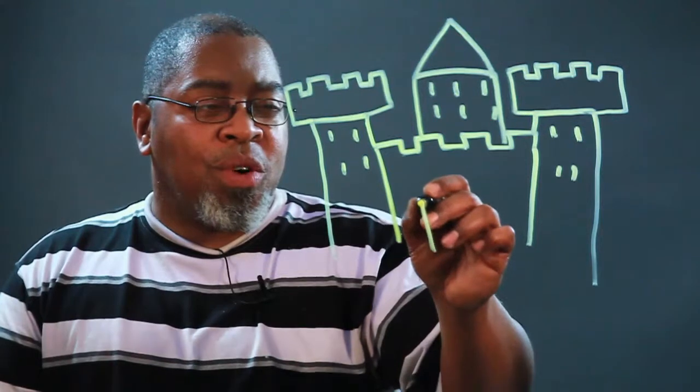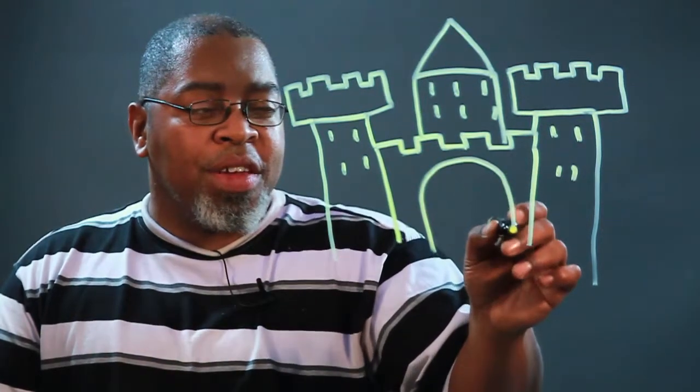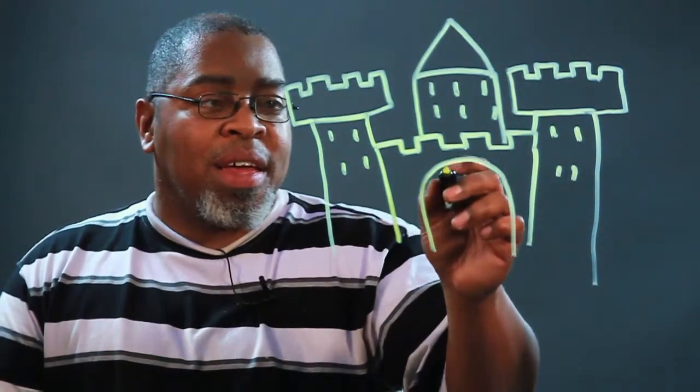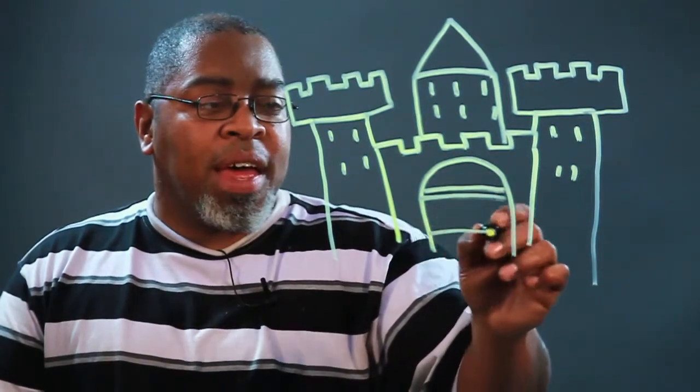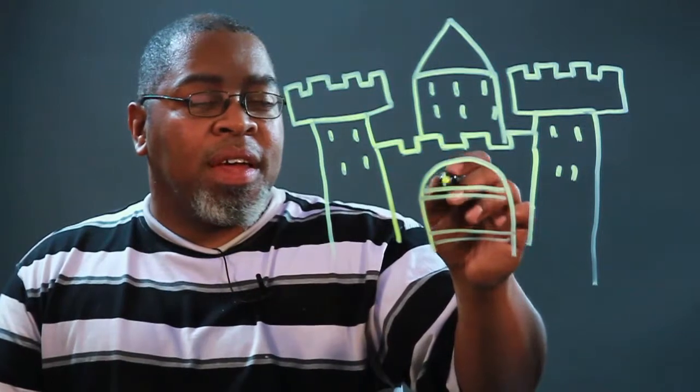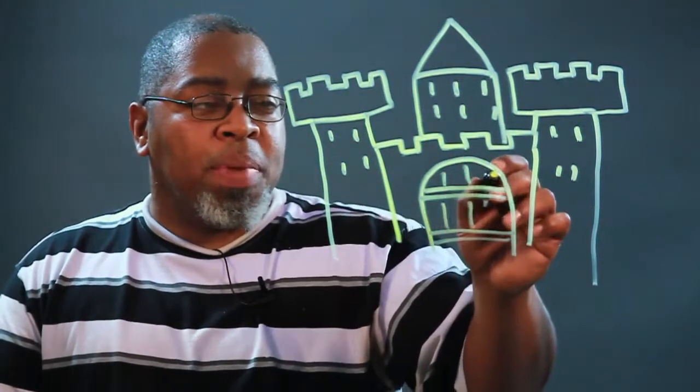Next we're going to draw an upside-down letter U. That's going to be the castle door. We're going to put some lines across it like this, because it's a big giant wooden door.